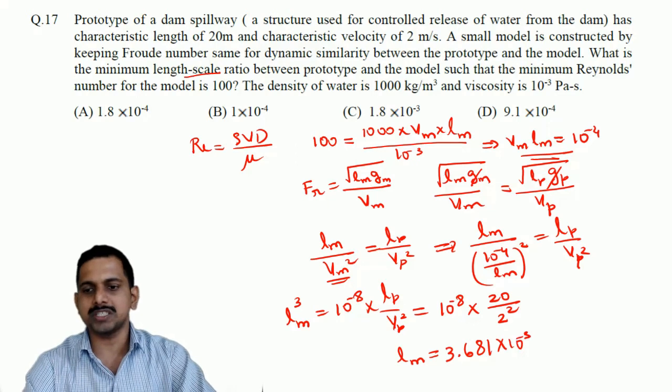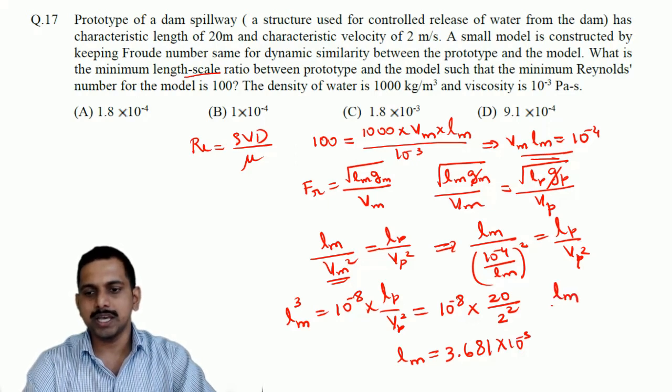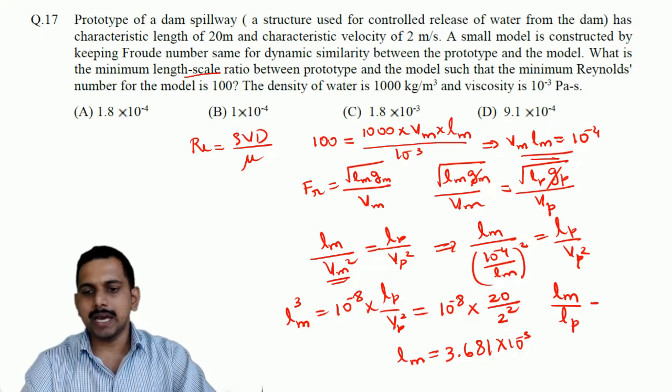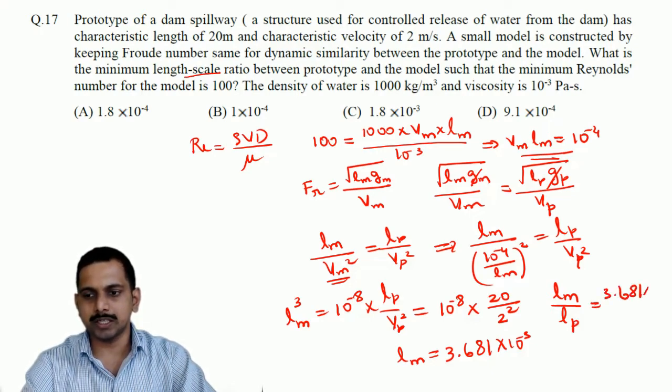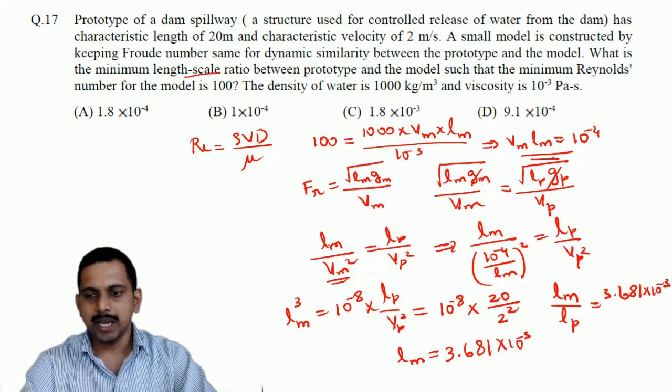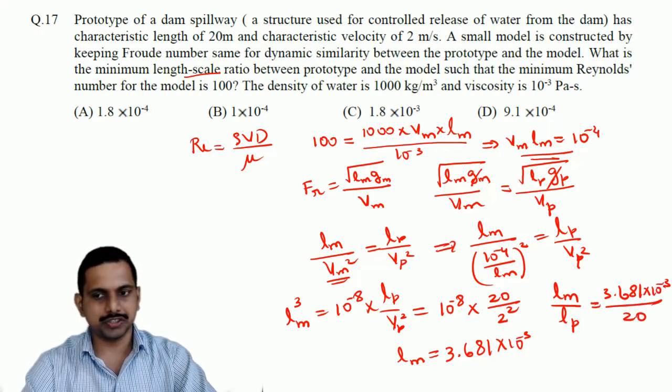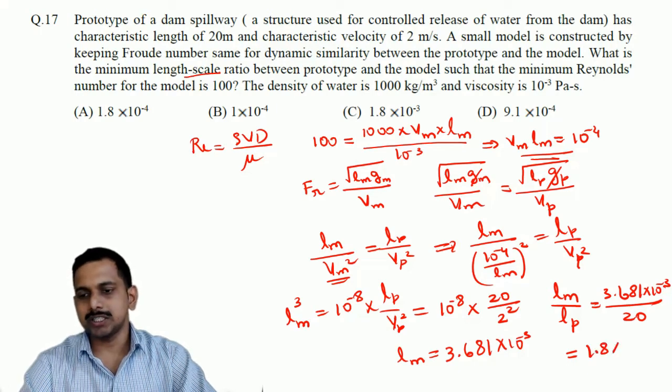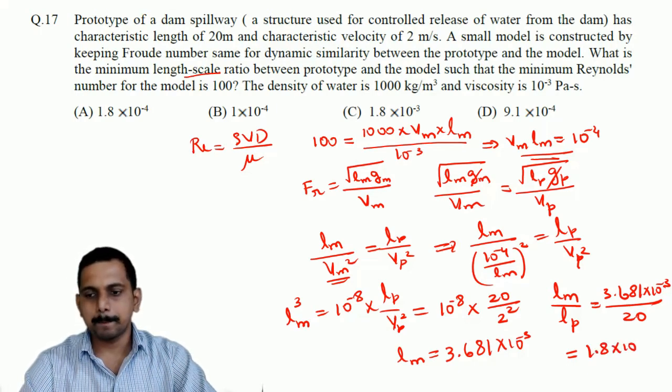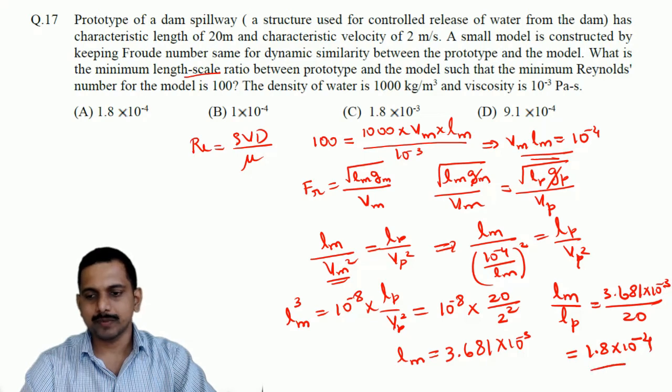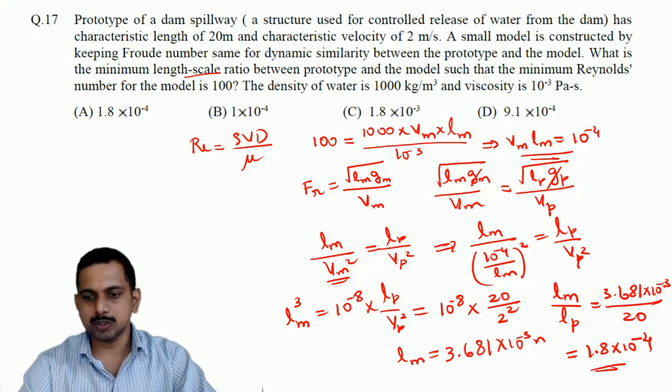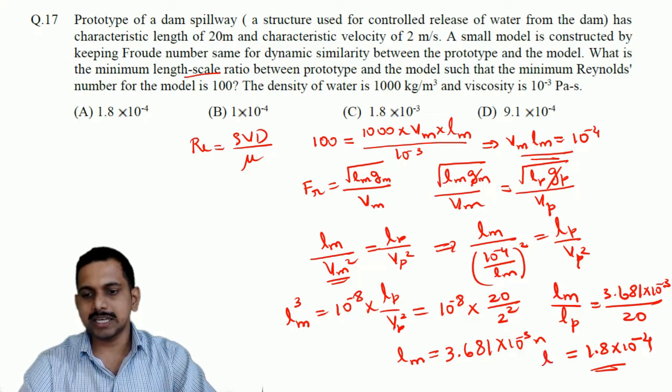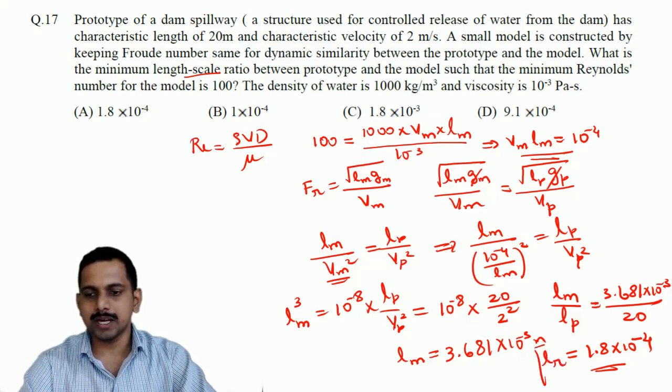And what is asked here? What is asked is the length scale ratio. Length scale ratio is L M by L P. L M is given as 3.681 into 10 power minus 3, L P is 20 meters, so this would come as 1.8 into 10 power minus 4. This is in meters. So this is length scale ratio, this would be the answer.